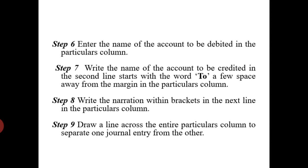Step 6: enter the name of the account to be debited in the particulars column. Step 7: write the name of the account to be credited in the second line, starting with the word 'To'. Step 8: write the narration — after passing each entry, you need to narrate and explain that transaction. Step 9: draw a line across the entire particulars column to separate one journal entry from the other.